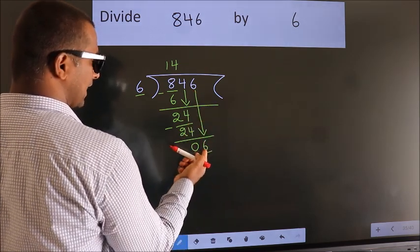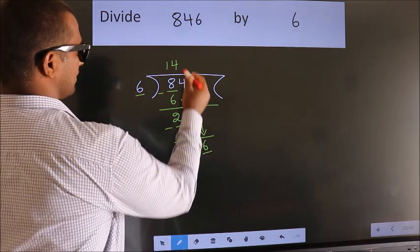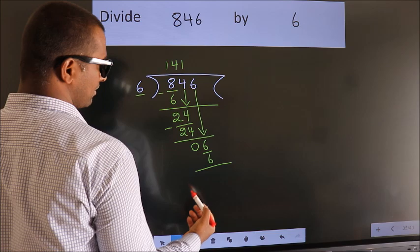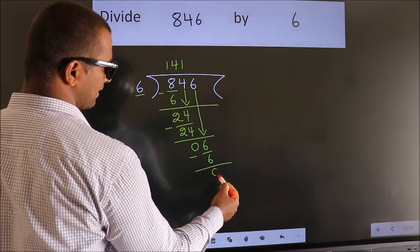When do we get 6? In 6 table. 6 once 6. Now we subtract. We get 0.